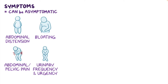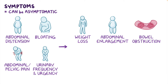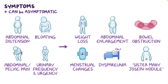Later, ovarian cancer can cause unintentional weight loss, abdominal enlargement, bowel obstruction, menstrual changes, and dyspareunia, or pain during sexual intercourse. A classic finding is a Sister Mary Joseph nodule, which happens when the cancer metastasizes, or spreads, to the umbilicus.